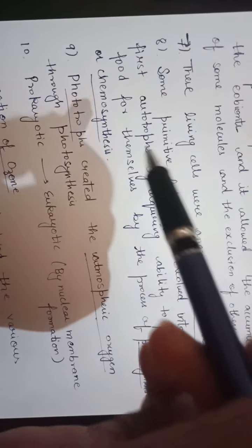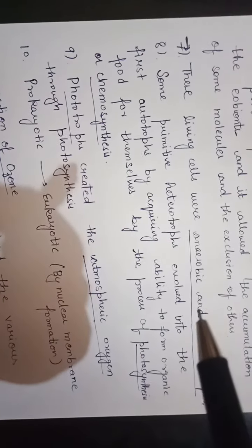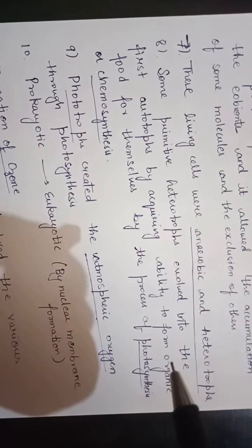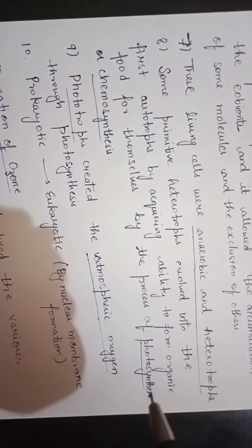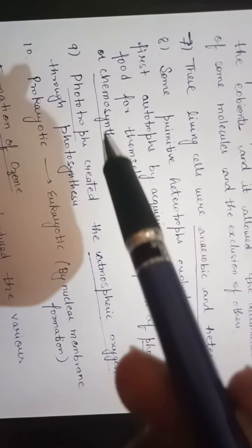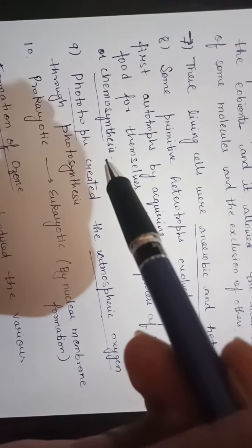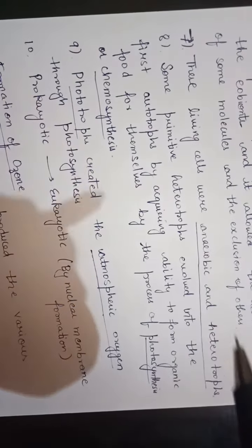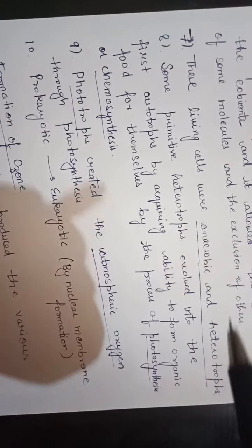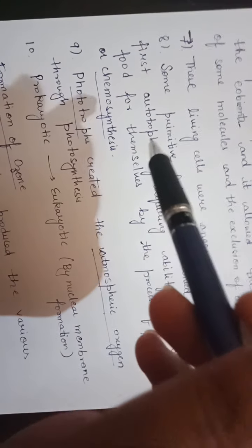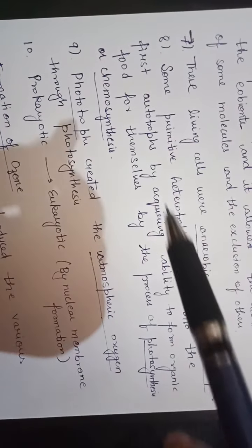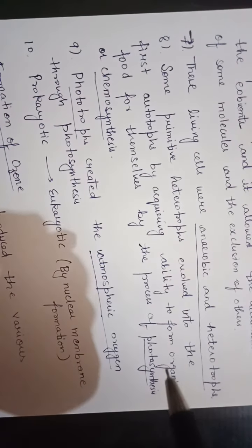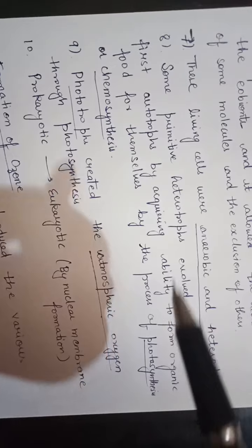Some primitive heterotrophs evolved into the first autotrophs by acquiring the ability to form organic food by the process of photosynthesis or chemosynthesis. Autotrophs were able to form organic food for themselves by these processes.